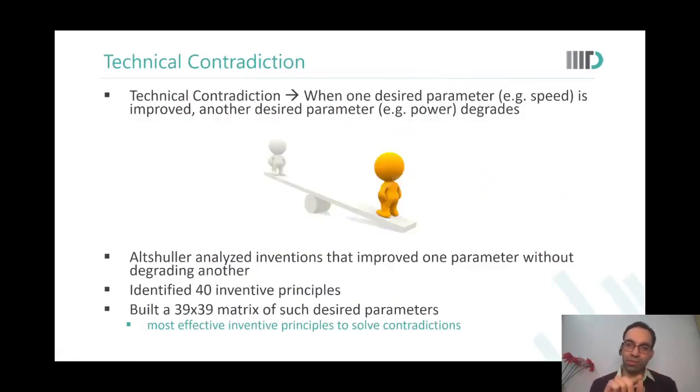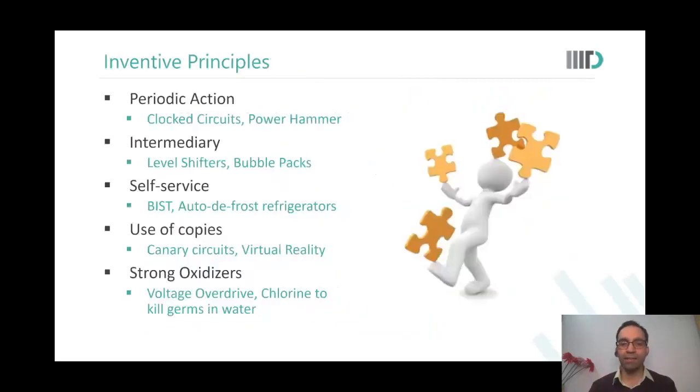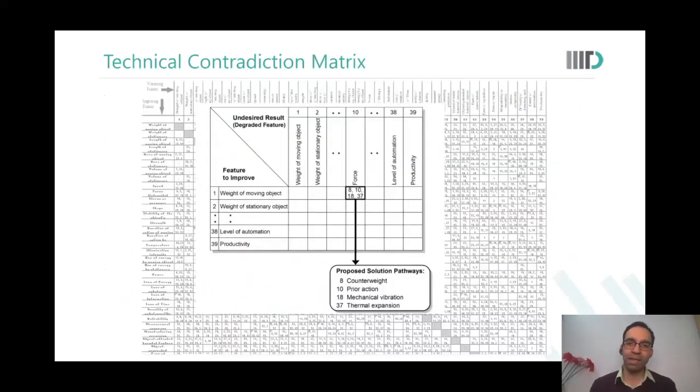Speed, power, efficiency, reliability, cost, manufacturability—all these parameters he put them there. And he said okay, if I am improving speed and the area degrades, then what are the inventive principles that are most commonly used?